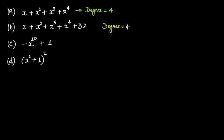The third polynomial is minus x raised to the power of 10 plus 1. There is only one term that contains the variable x, so by default you don't have to compare it with any other terms. Simply, the degree in this case is 10.